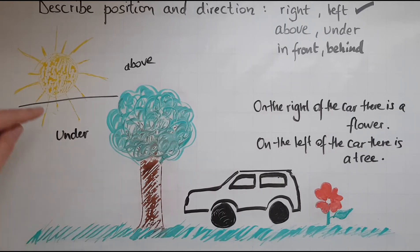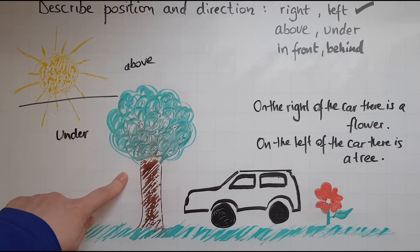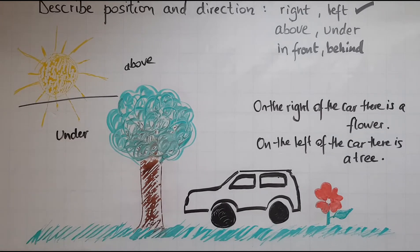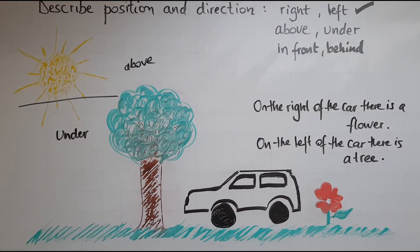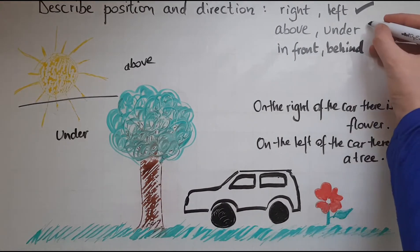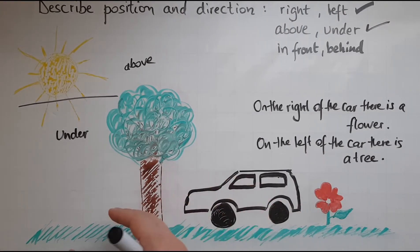The Sun is above the grass, the Sun is above the car, the Sun is above the flower. Under the Sun there is a tree, there is grass, there is a car, and a flower.